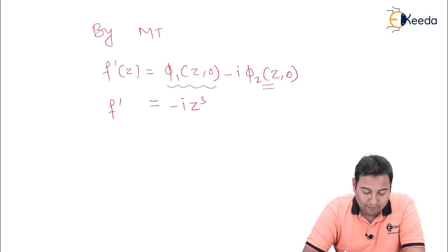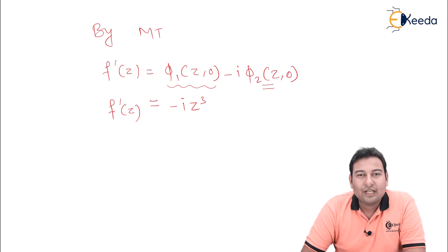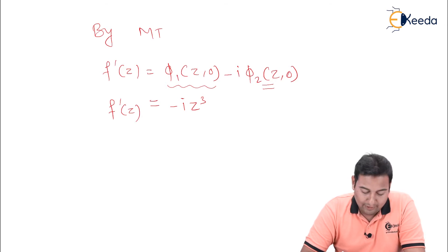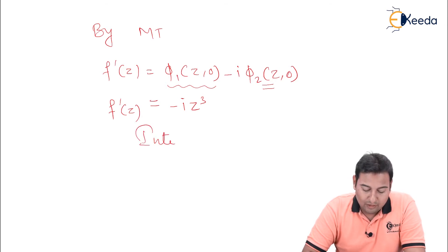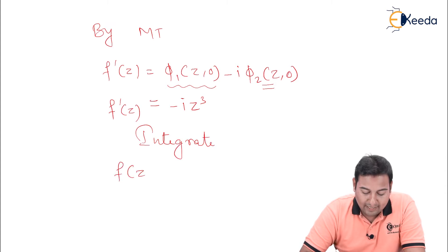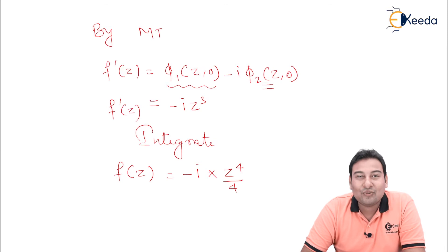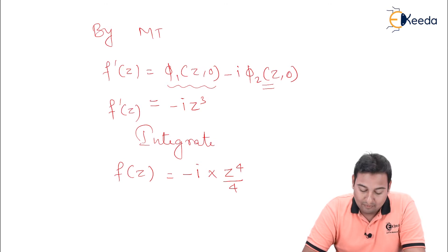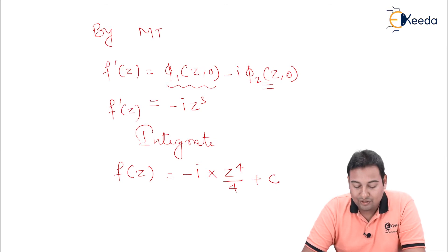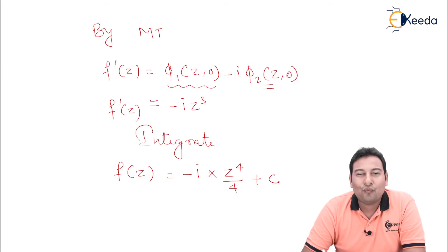The next step: f dash of z is equal to phi 1(z, 0) plus i phi 2(z, 0). The first term is already 0 and the second term is z cube, so basically f dash of z equals minus i times z cube. After integrating, you will get f of z as: minus i is constant, z cube integration is z raise to 4 upon 4, that is z raise to n+1 upon n+1, plus constant of integration c.